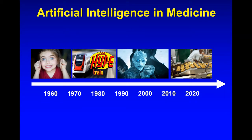AI in medicine has had a very interesting history going back to the 1950s and 60s, when there was a lot of excitement. Computers were new after World War II, and prior to that time AI was really more of a science fiction or philosophical exercise. When computers came on the scene, people got excited because we could start to implement the first artificial intelligence algorithms.